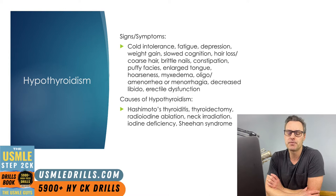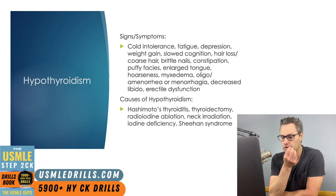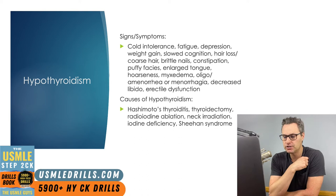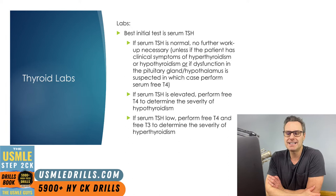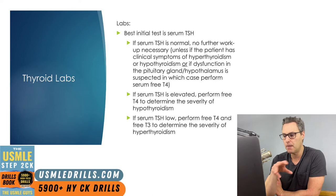Causes of hypothyroidism include physical or autoimmune destruction of the thyroid gland, or damage to the pituitary gland. These conditions include Hashimoto's thyroiditis, thyroidectomy, radioiodine ablation, neck irradiation, iodine deficiency, and even Sheehan syndrome. The most common cause is Hashimoto's thyroiditis, which we'll talk about shortly. When you suspect hypothyroidism, your best initial test is TSH. If serum TSH is normal, no further workup is necessary — unless the patient has clinical symptoms and you're suspicious, or if pituitary or hypothalamic dysfunction is suspected, at which point you look at free T4.